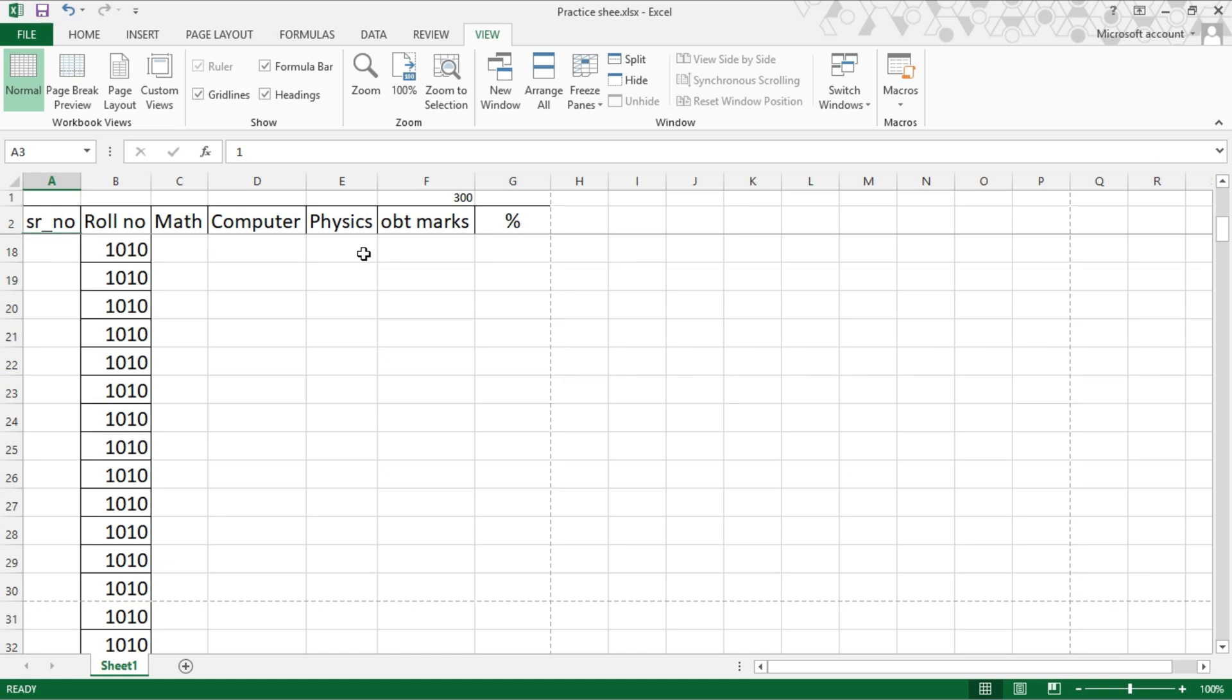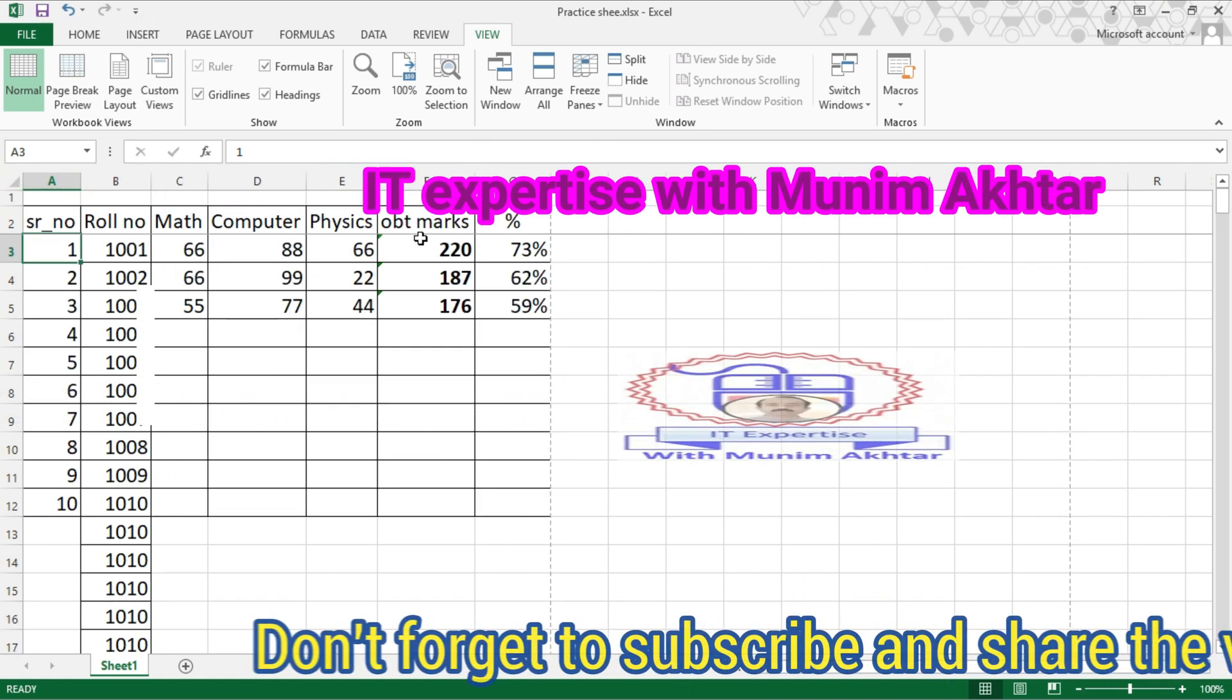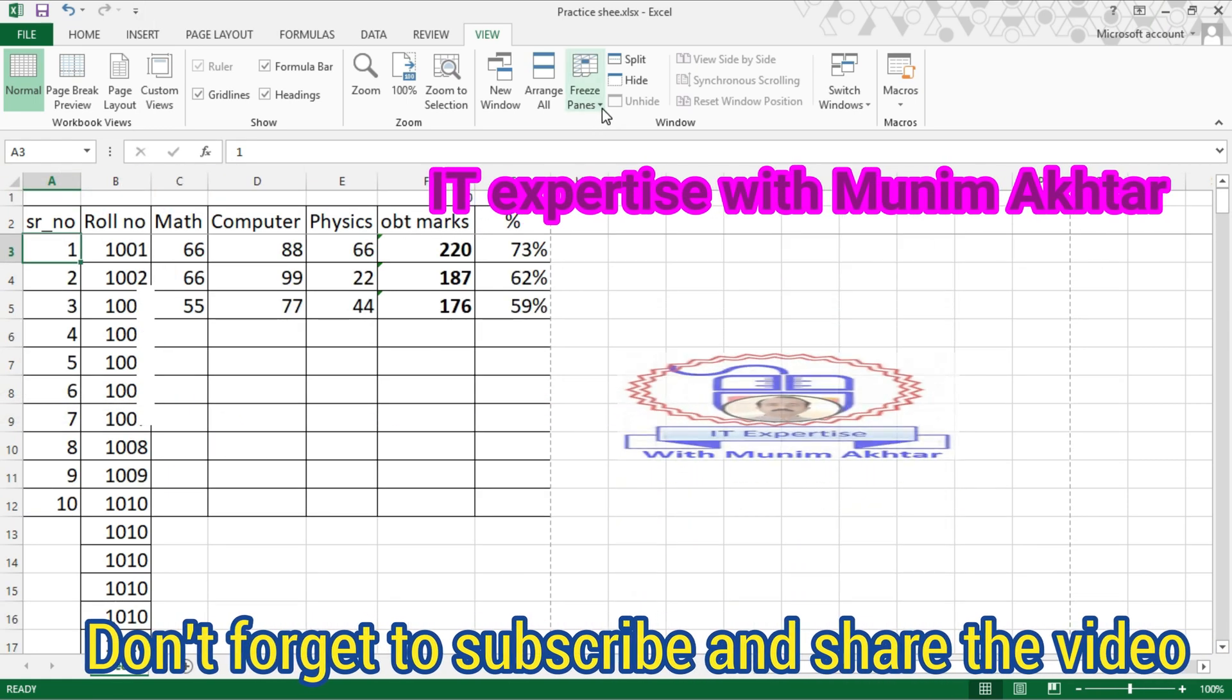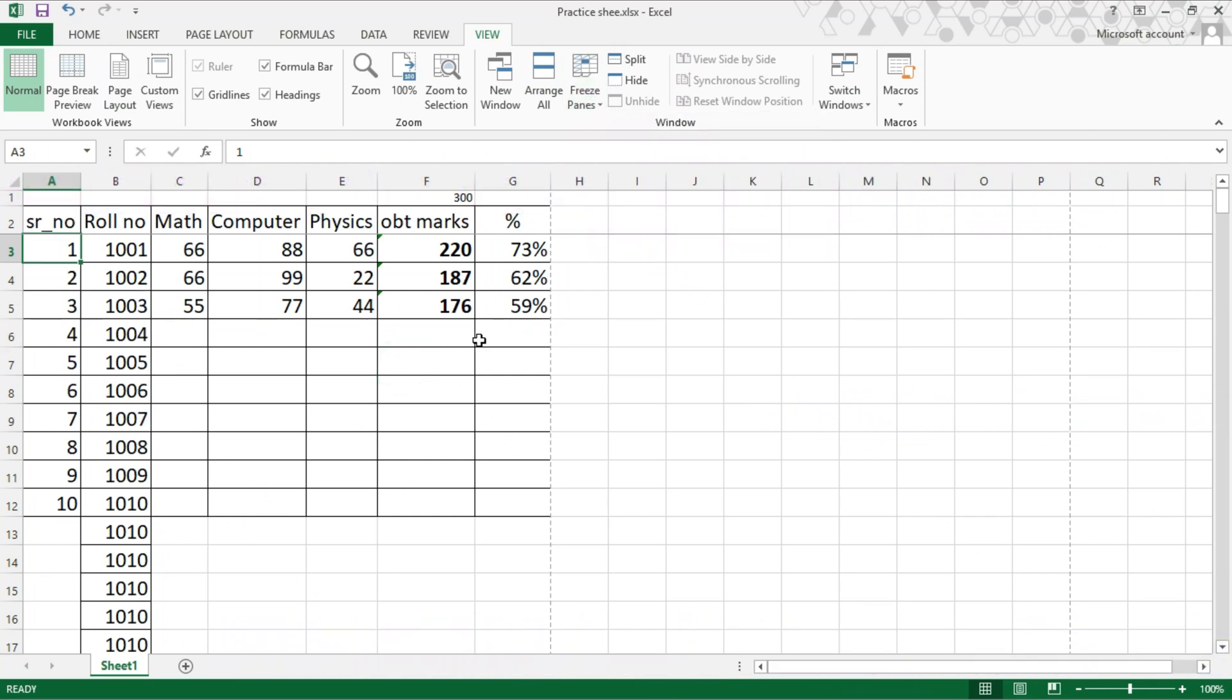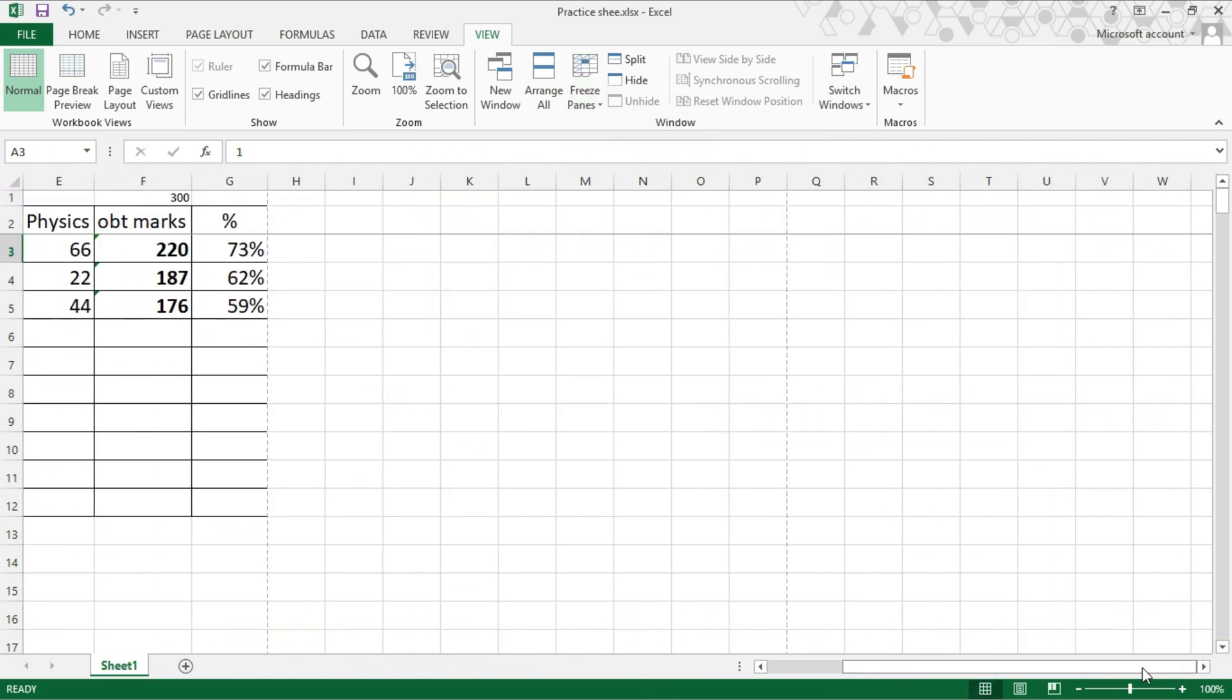First row is now frozen. Next option, utilize it vertically. See the first column.